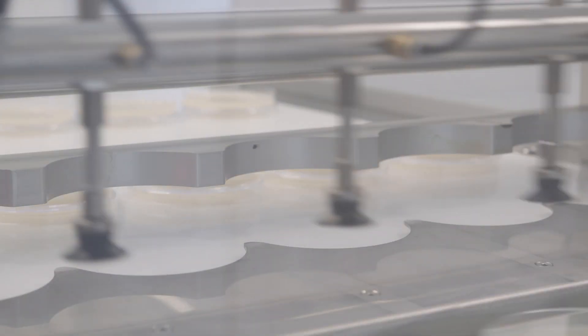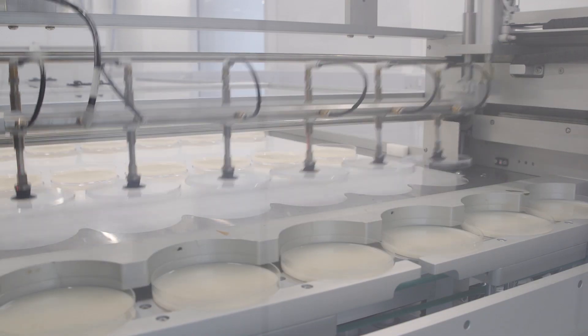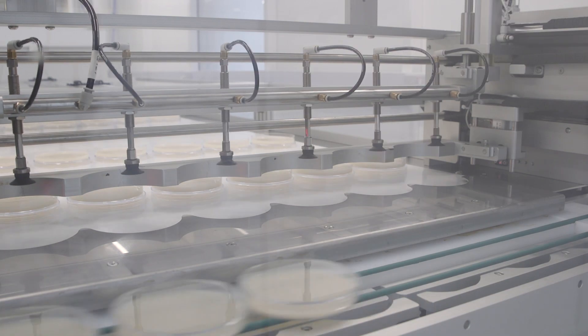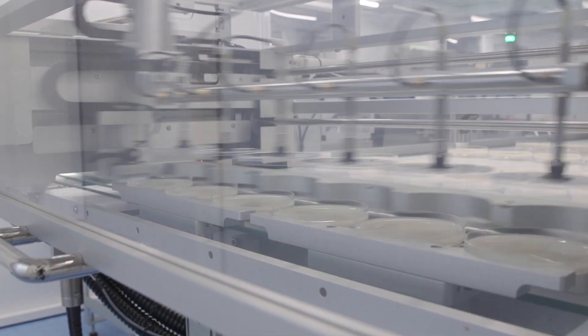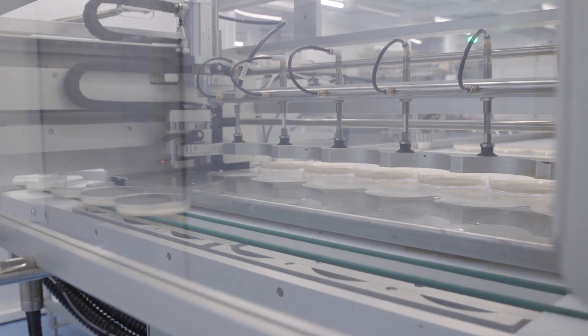Plates are filled and moved along the line to be dried and labelled. The plates are labelled with a product code, lot number, time of manufacture and expiry date. This provides traceability to the previously QC tested dehydrated culture media used through our system.